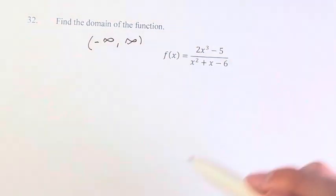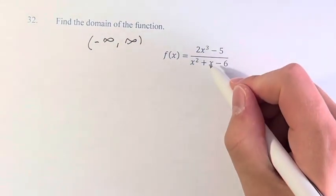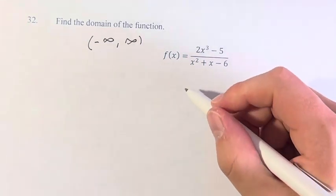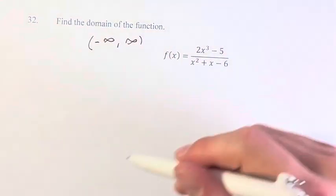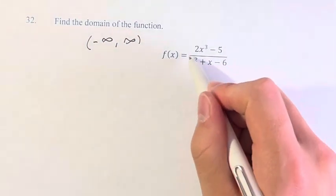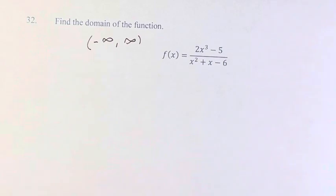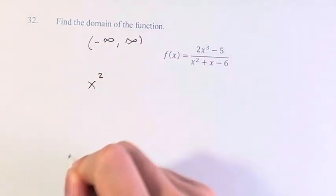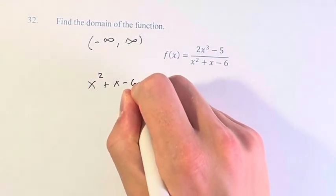In this case, the only way we could have an invalid value is if the denominator was equal to 0, in which case we would be dividing by 0, which obviously you cannot do. So to find what values would actually create a 0 in the denominator, we're going to set it equal to 0. x squared plus x minus 6 is equal to 0.